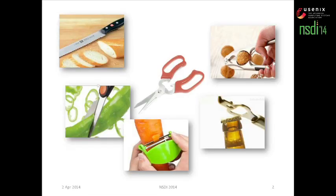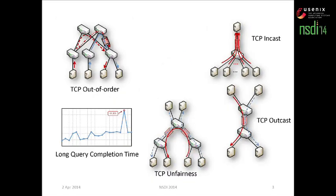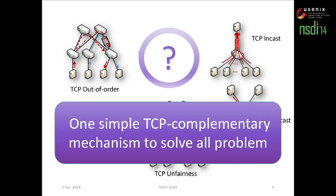I quite like cooking, so I will work in the kitchen. There are a lot of things we need to do — maybe cut, slice, or open the bottom. For each kind of thing, we need specific tools to tackle the problem. But I always don't remember where things are, so I find another thing: a multi-function scissors. This can do all things. So I think this is like TCP in today's data center networks. TCP faces a lot of problems, and for each problem there may be many solutions, but we cannot easily combine them together. So we ask whether we can find one simple TCP complementary mechanism to solve all the problems.